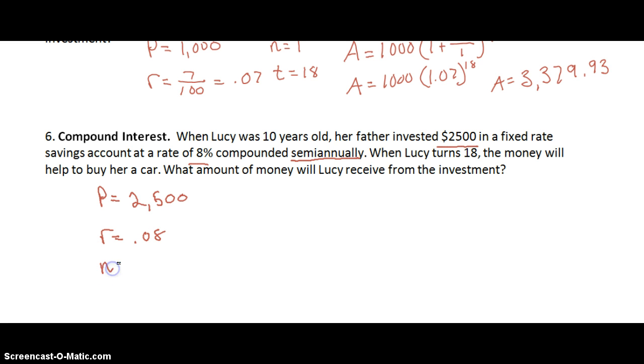And then we're looking for N. How many times a year was it compounded? This time it was compounded twice a year because it said semi-annually. So N is going to be 2. And our last variable is T. How long is it going to be compounded? How many years? Well, we invested when she was 10. We get it back when she turns 18. So our T is going to be 18 minus 10 years is going to be 8. So our T is going to be 8.